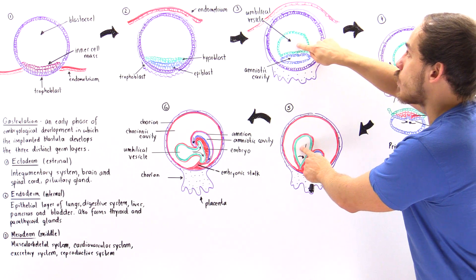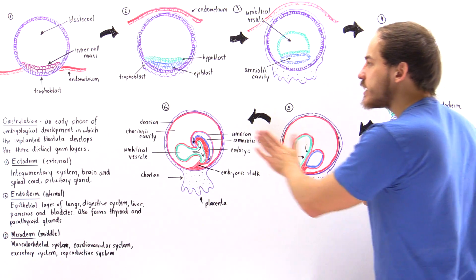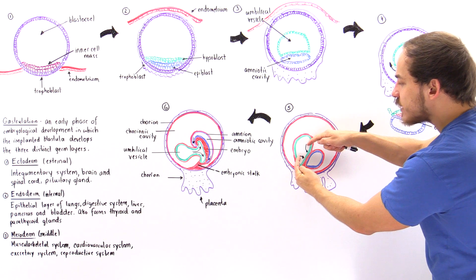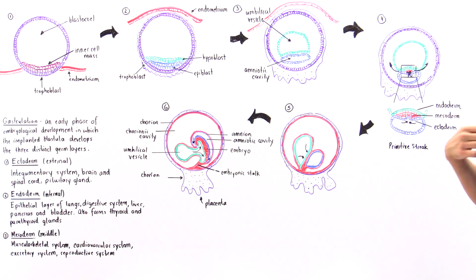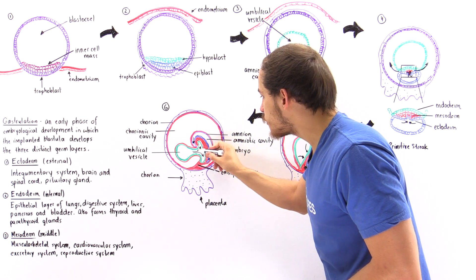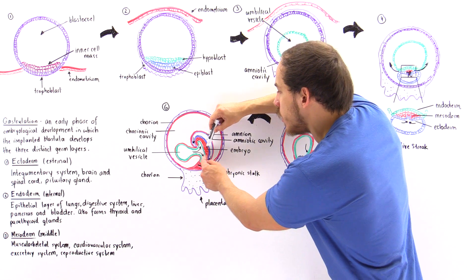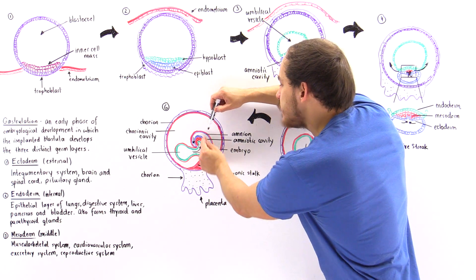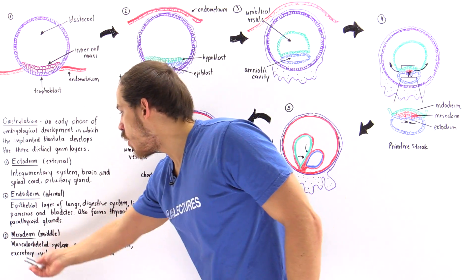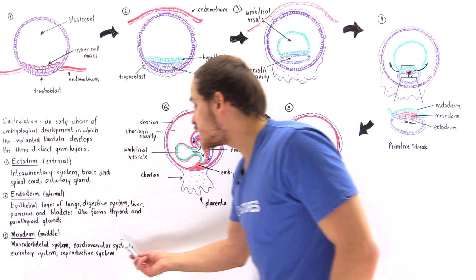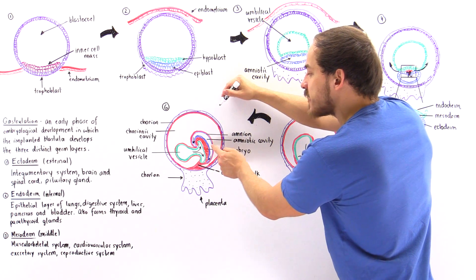In diagram five, the umbilical vesicle and the amniotic cavity — where the fetus will be found — are now distinguishable. Going from diagram five to six: this section moves inward, and we form an embryo that contains the developing fetus. The red portion is the mesoderm — the middle layer — which forms the musculoskeletal system, the cardiovascular system, the excretory system, and the reproductive system: everything found between the green layer and the blue layer.